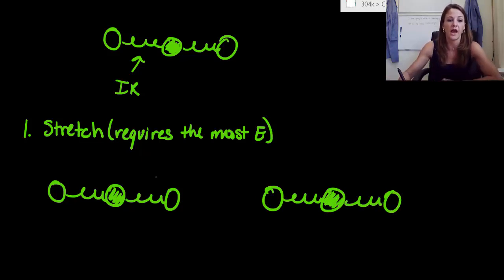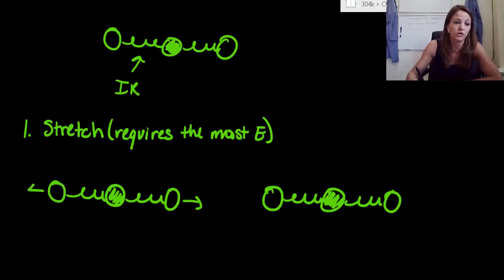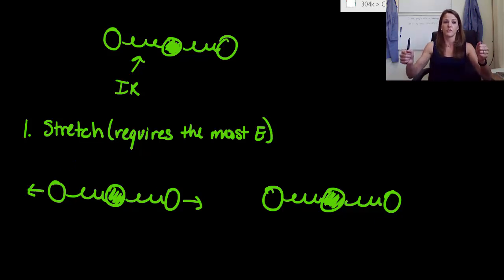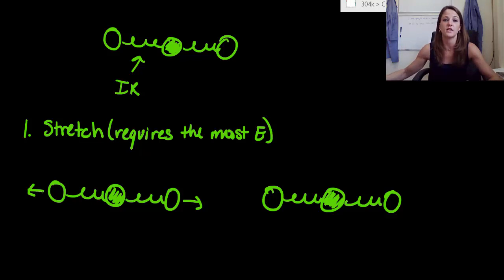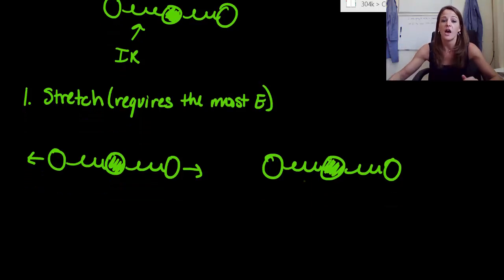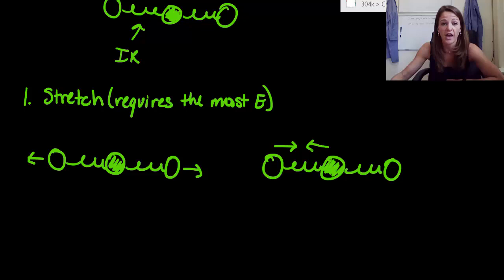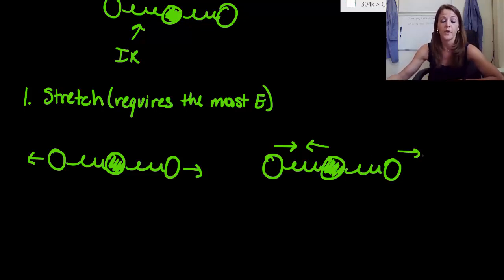The first thing that can happen is a symmetric stretch — one oxygen pulls to the right and one oxygen pulls to the left. Picture your oxygens for carbon dioxide pulling in the opposite direction; that's a symmetrical stretch. The opposite thing would be an asymmetric stretch: one oxygen goes to the inside, the carbon comes back at it, and then the other oxygen still goes to the right.